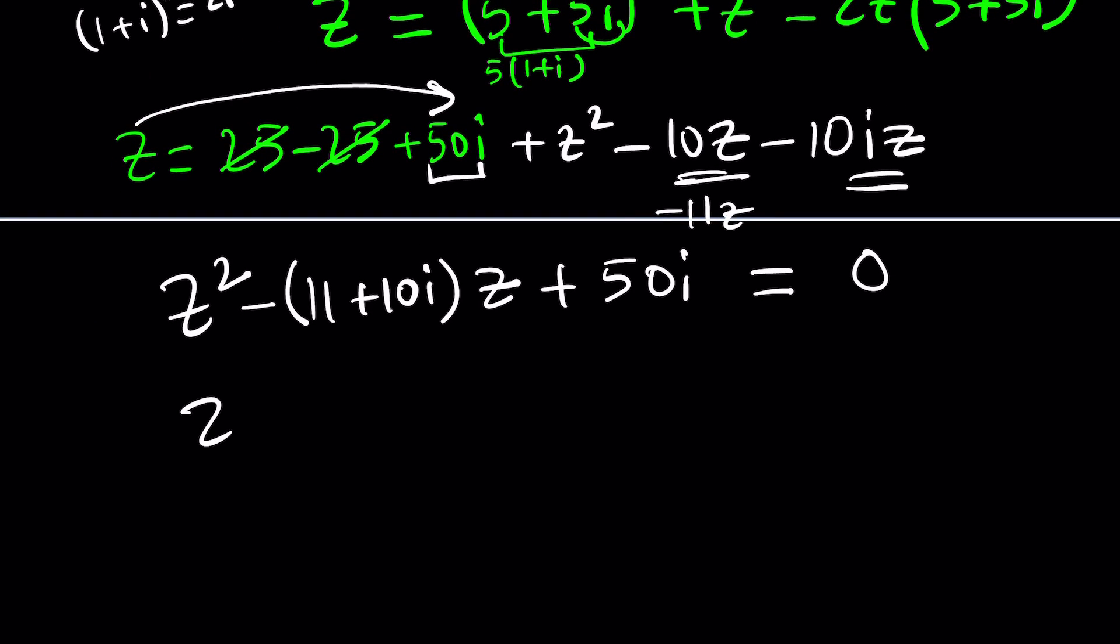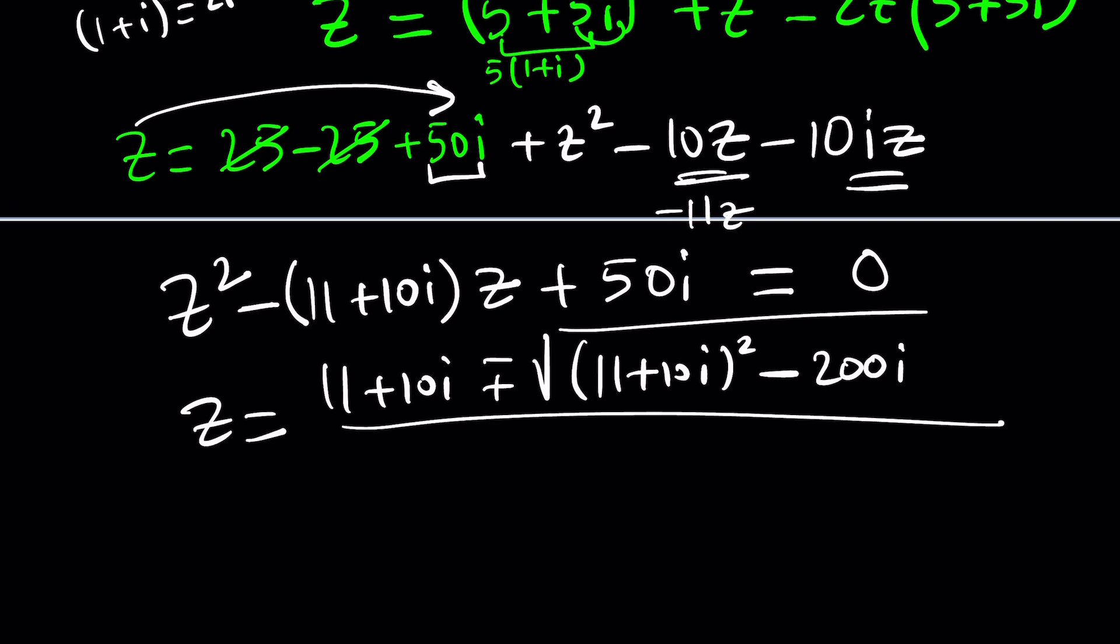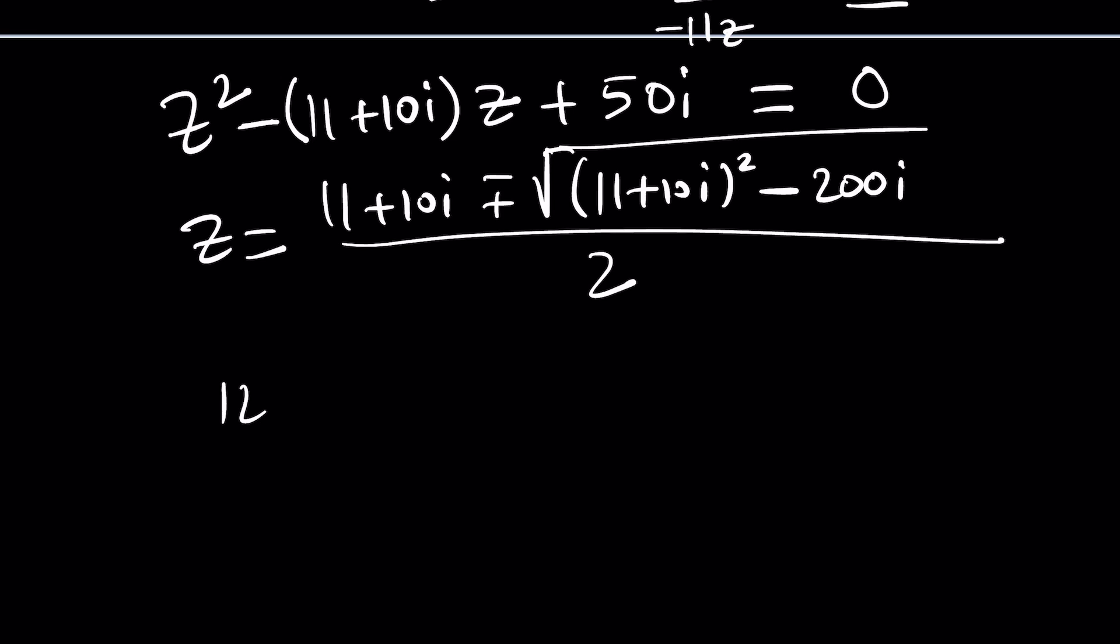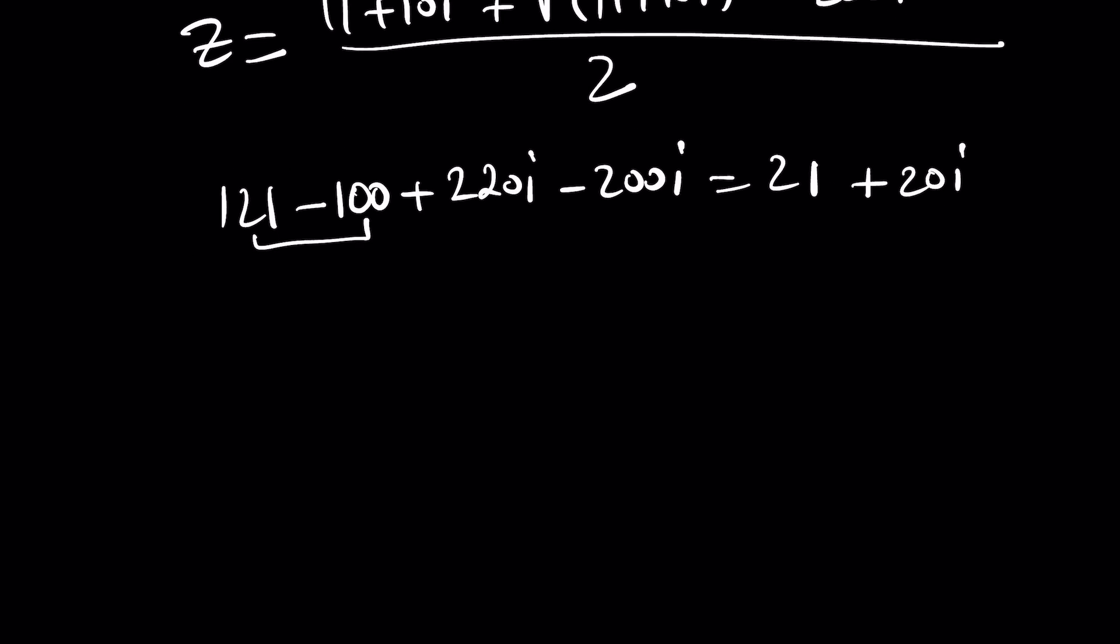Now, to solve it, we can use the quadratic formula: negative b plus minus the square root of b squared. So we got to take this b and square it minus 4ac, but c is plus, so minus 200i divided by 2a, which is 2. Now let's simplify under the radical. That's 121 minus 100 from 100i squared plus 220i minus 200i. And this is under the radical, but let me simplify this first: 21 plus 20i. And that's awesome. 11 plus 10i divided by 2.